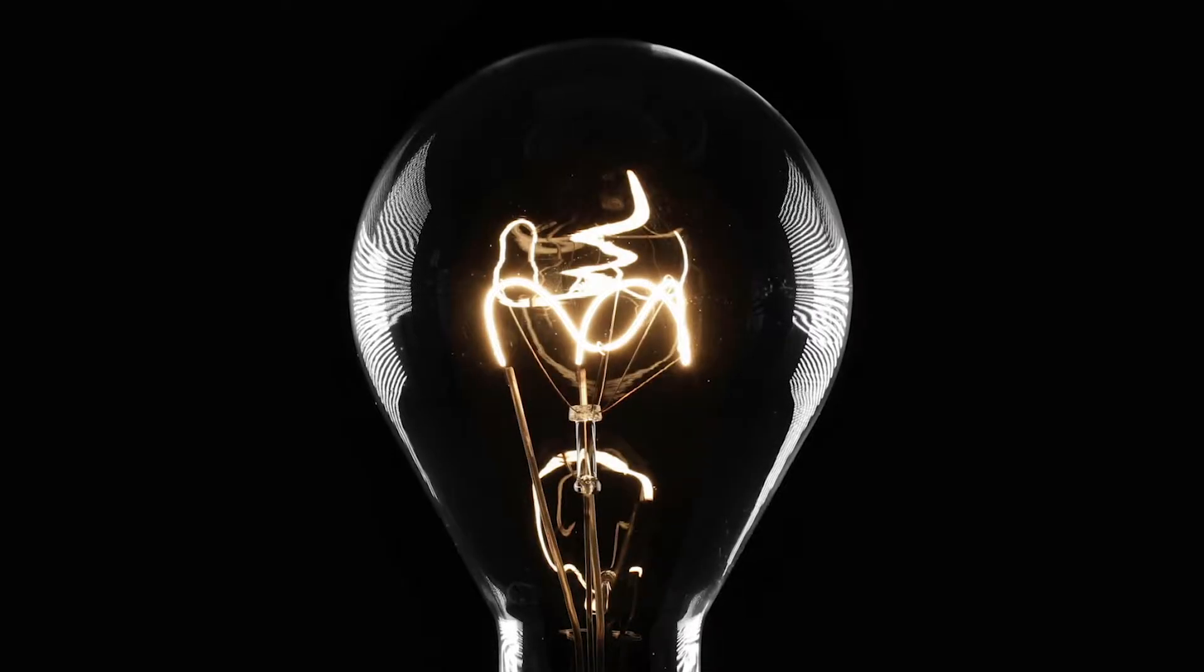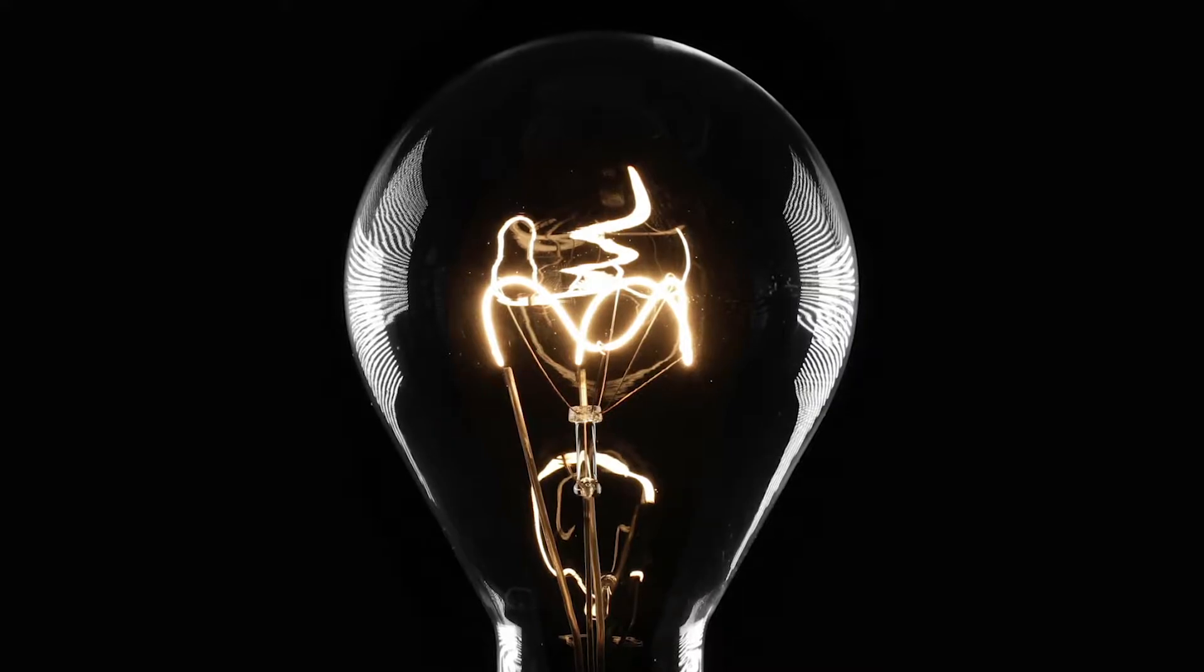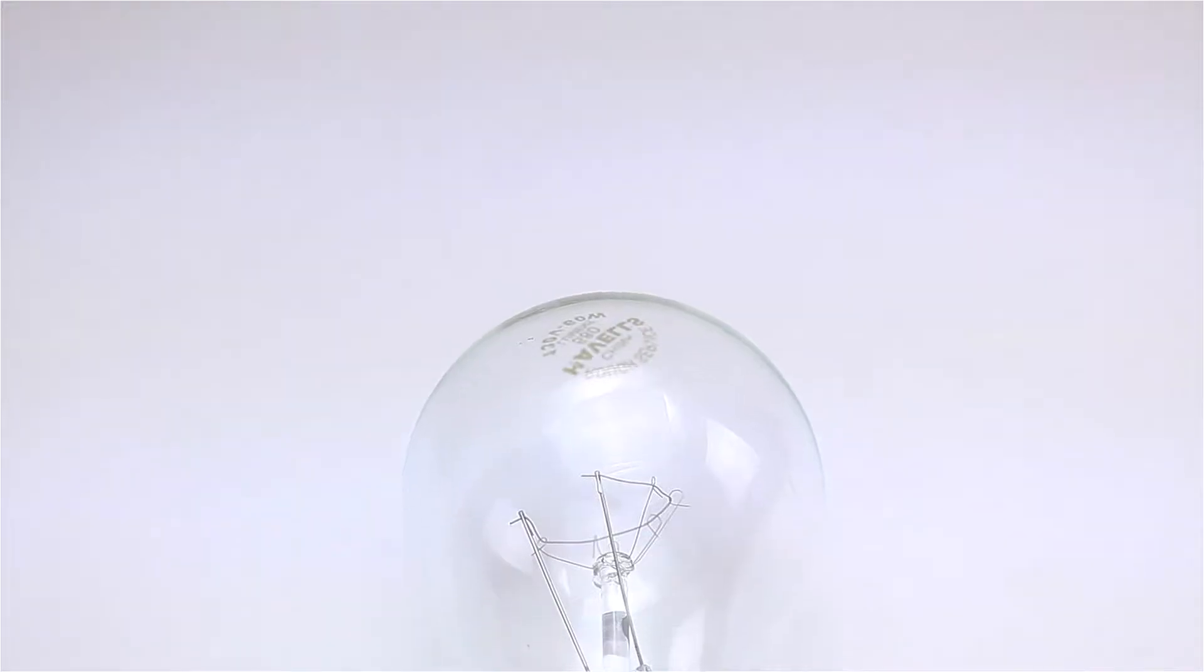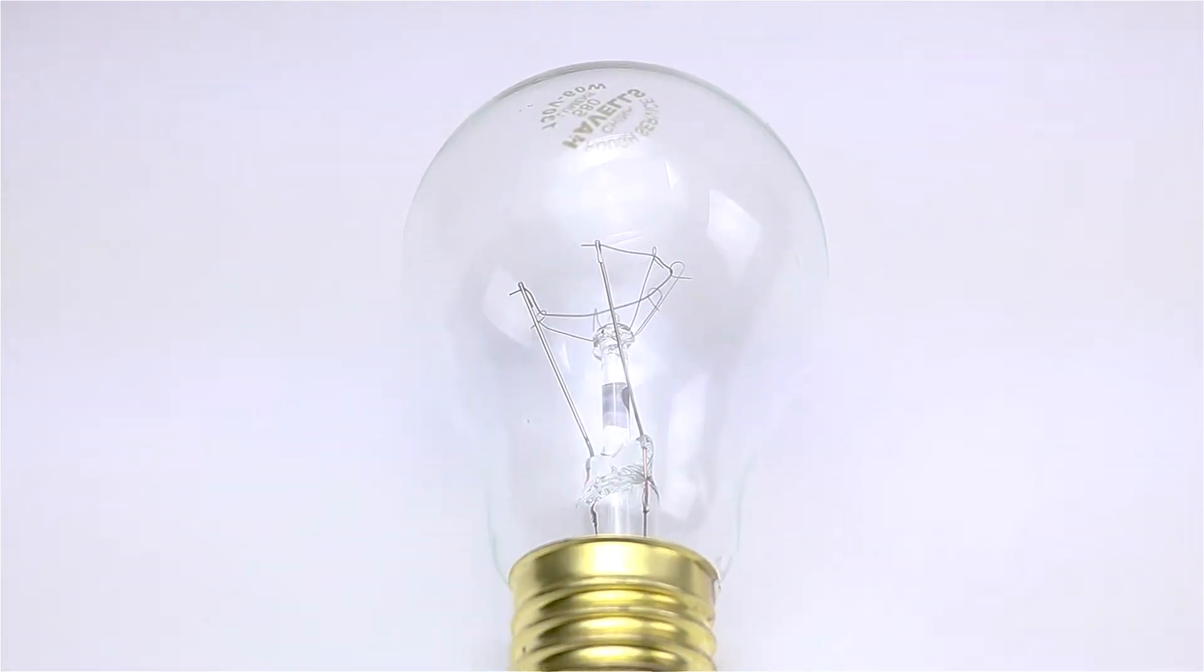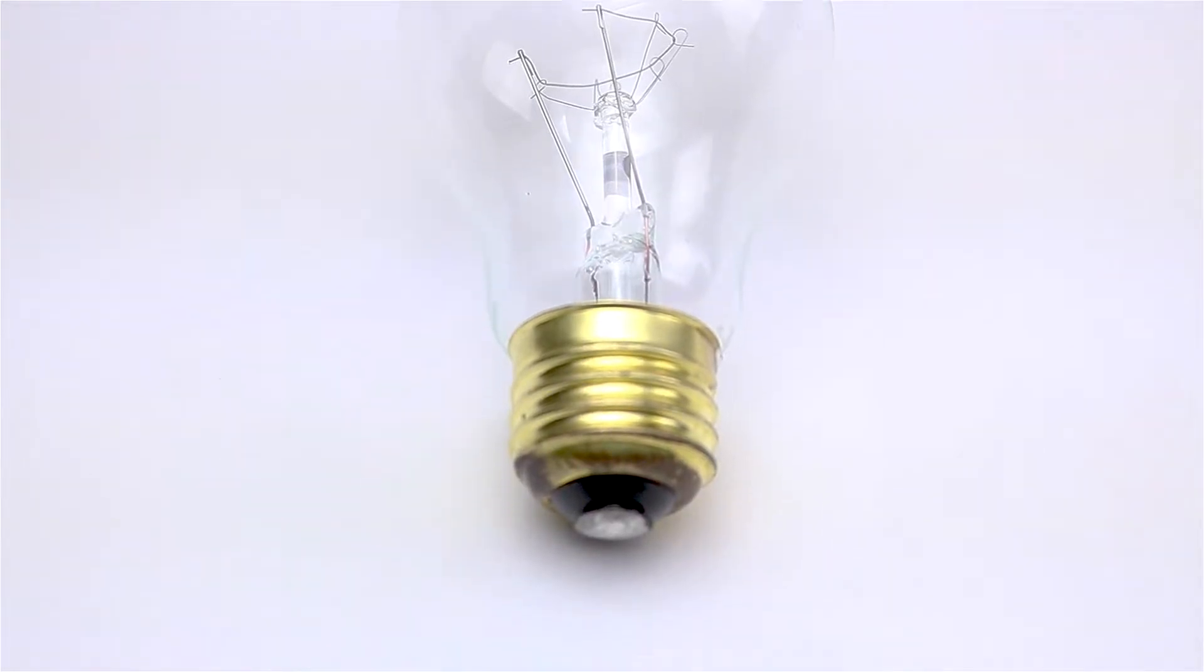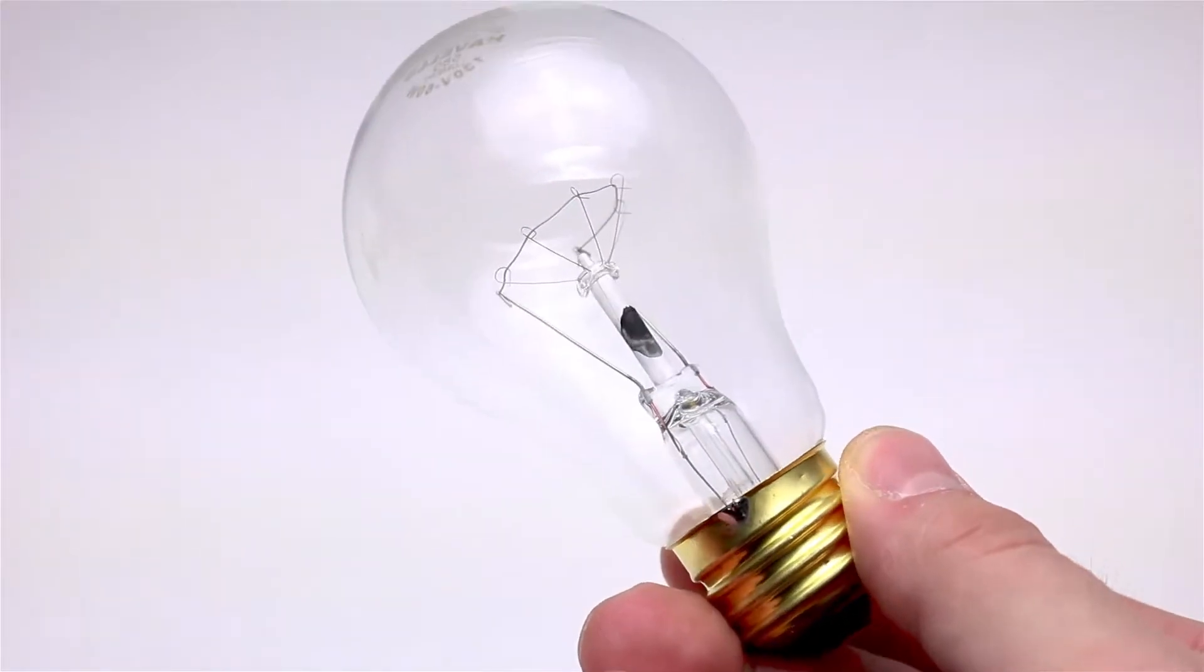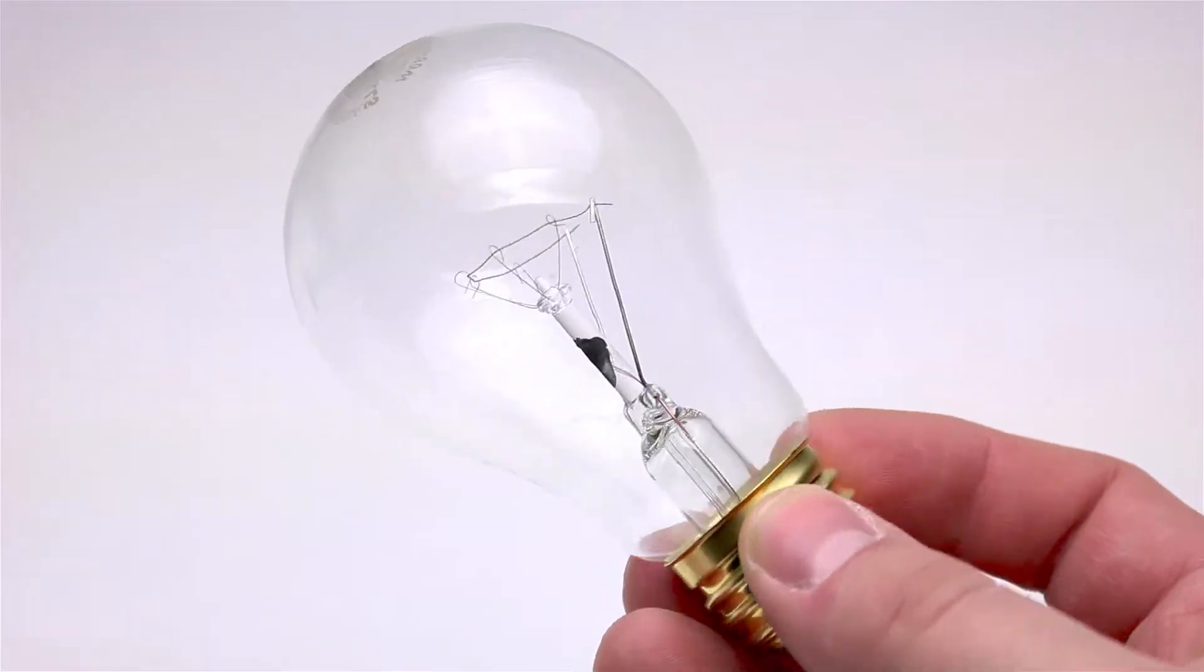If you've ever had a bright idea, you could say you've had an A19 light bulb. This is the shape of light bulb often used in cartoons to depict someone having an idea, and it's what we might consider the standard or traditional light bulb shape.